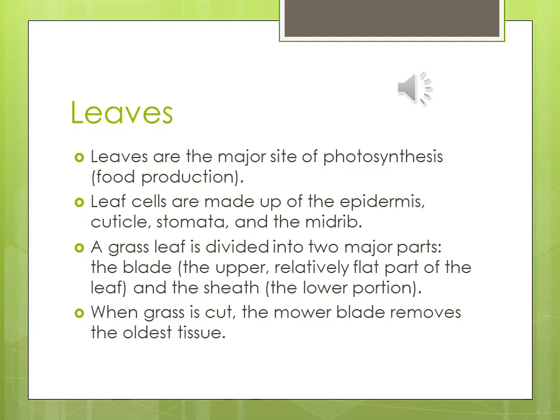Leaves are the major site of photosynthesis or food production. Leaf cells are made up of the epidermis, the cuticle, the stomata, and the mid rib. The grass leaf is divided into two major parts: the blade — the upper, relatively flat part — and the sheath, the lower portion. When grass is cut, the mower blade removes the oldest tissue. Leaf cells — epidermis, cuticle, stomata, and mid rib — could be a pop quiz or test question.